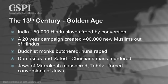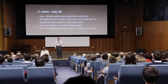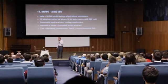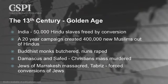Buddhist monks are butchered, nuns are raped, and then an intellectual tragedy happened: the library at Nalanda — at that time the largest library in the world, a Buddhist library — it took days to burn. In Damascus and Safi there's mass murder of Christians. The Jews of Marrakesh are massacred. In Tabriz there are forced conversions of Jews.